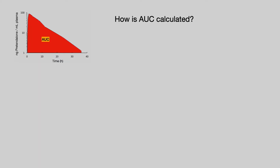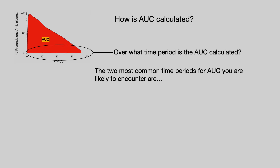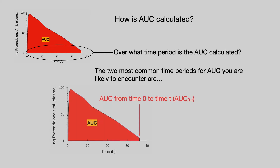The concept of exposure is discussed in greater detail in the textbook Clinical Pharmacokinetics from the Beginning. How is the area under the curve calculated? The first thing you have to decide is over what time period the AUC is to be calculated. The two most common are AUC from time zero to some defined time T — called AUC naught to T — and AUC from time zero to time infinity — called AUC naught to infinity.